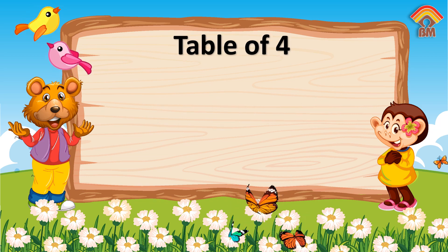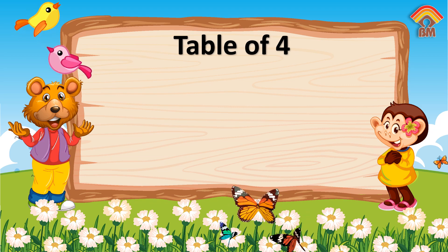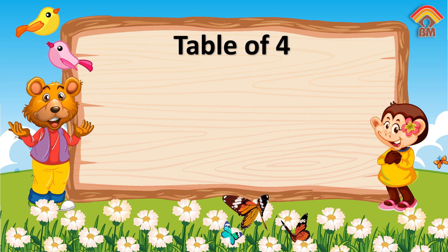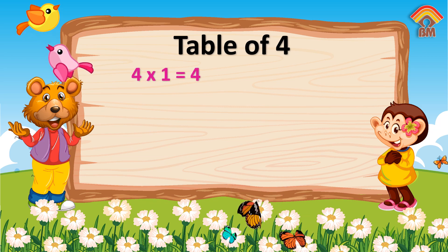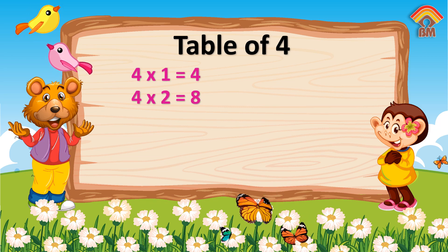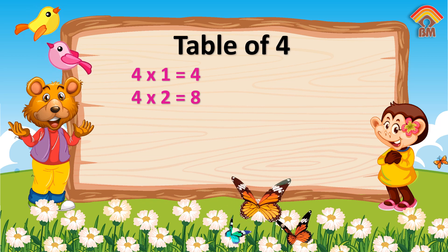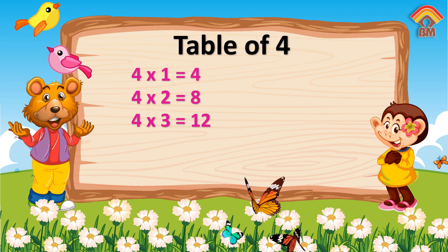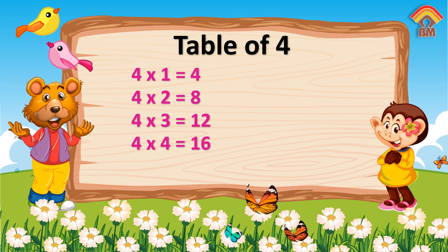Table of Four. Four ones are four. Four twos are eight. Four threes are twelve. Four fours are sixteen.